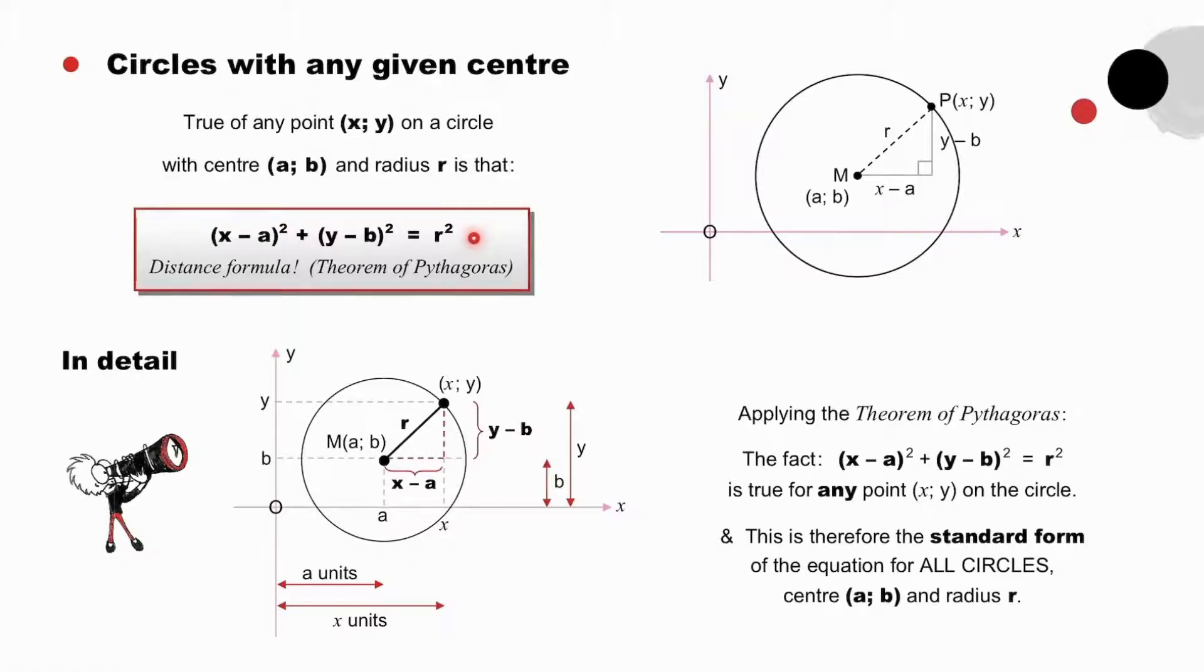And this equation is actually the distance formula. But really, the theorem of Pythagoras. And therefore, this is the equation of a circle with center (a, b) and radius r. It is the standard form of the equation of all circles.